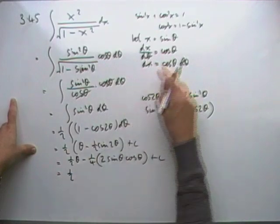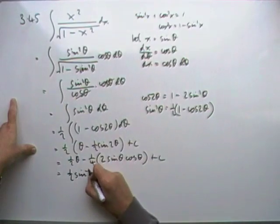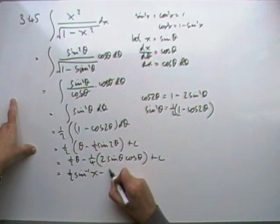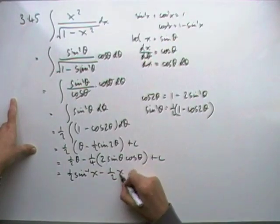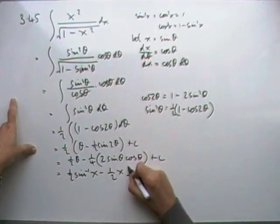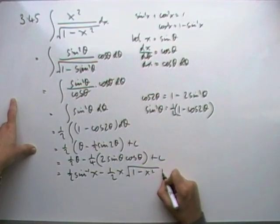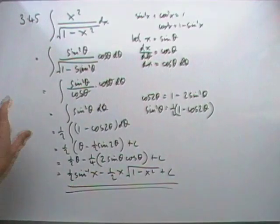So I've got a half of θ. Theta was, it'll have to be inverse sine x. That's minus a half. Sin θ, that was just x. Cos θ, well, cos² was 1 minus it, so the cos will be the square root of 1 - x² plus C. It's probably neat that way with a minus in the middle. And that's that one done.